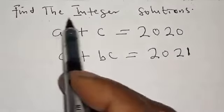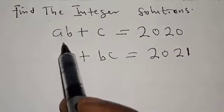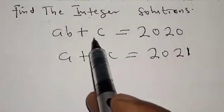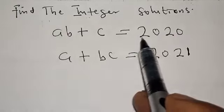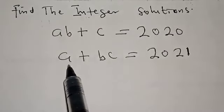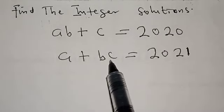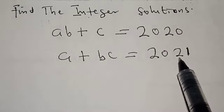Find the integer solutions. AB plus C is equal to 2020. A plus BC is equal to 2021.